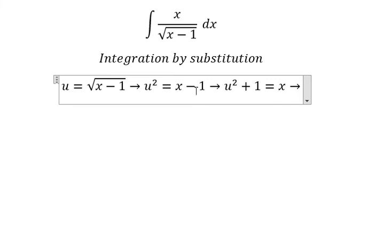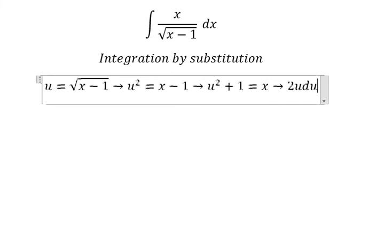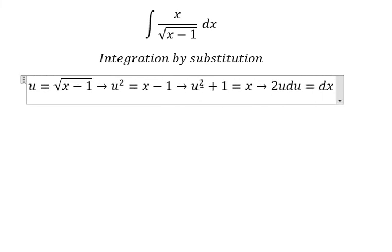Next we take the first derivative for both sides. We have 2u du equals to dx. The first derivative of u squared gives us 2u.